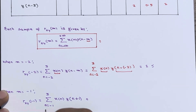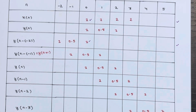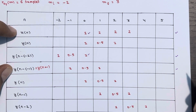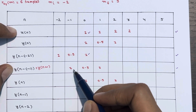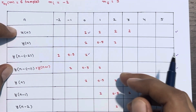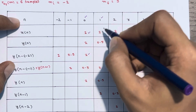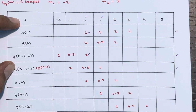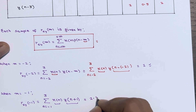When m = -1, we need x(n) times y(n+1). The common points are at n = 0 and n = 1. So 1 times 1 is 1, plus 1 times 0.5 is 0.5 — giving 1 plus 0.5 equals 1.5. Therefore rxy(-1) = 1.5.